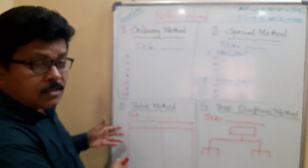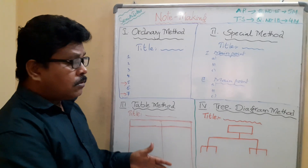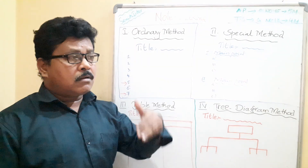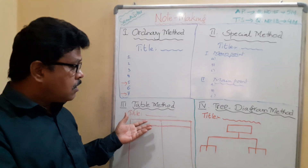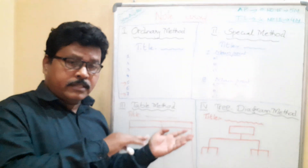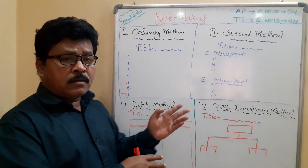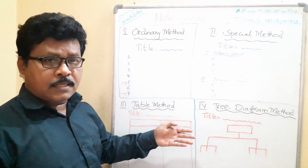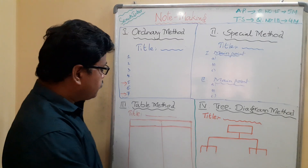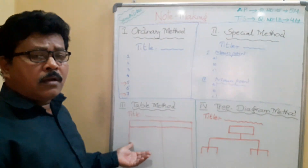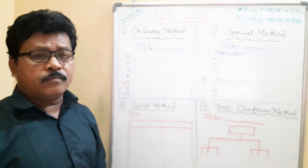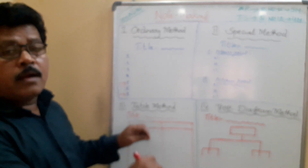The third method is the table method. Apply this when the passage gives advantages and disadvantages, or a comparison and contrast — for example, mobile phones' advantages vs. disadvantages, or online classes' advantages vs. disadvantages. Write the title, then create two columns: advantages on one side and disadvantages on the other. Write three to four points in each column — they need not be equal in number.